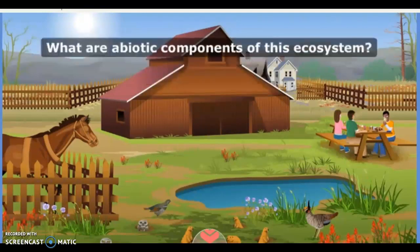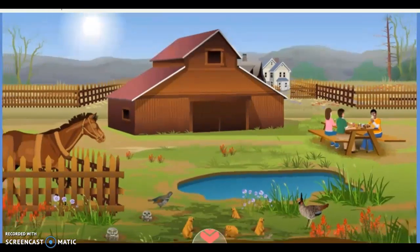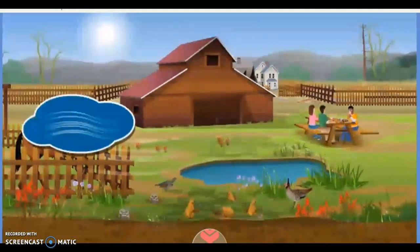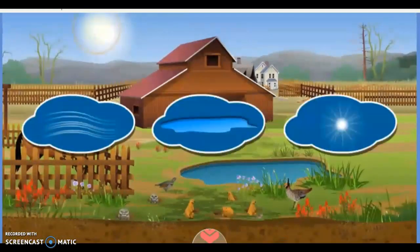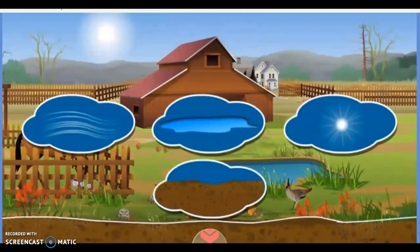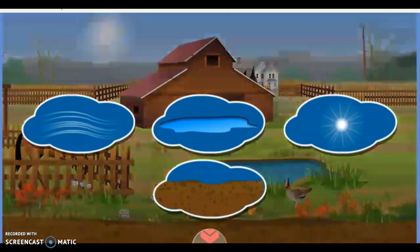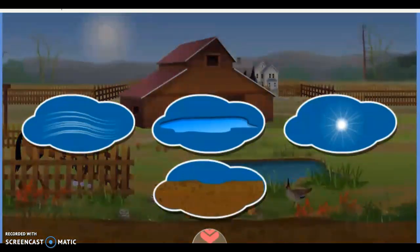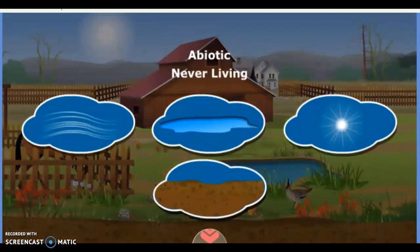What are abiotic components of this ecosystem? Air, water, light, and soil are some examples of things that were never living. These are the abiotic components of this ecosystem. Abiotic means not of life.